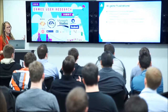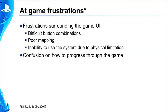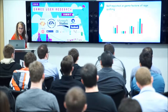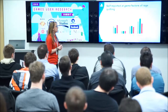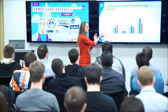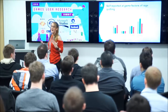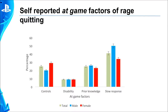Now let's look at at-game frustrations — frustrations surrounding the game UI: difficult button combinations, poor mapping, an inability to use the system because of a disability or physical limitation, or general confusion in how to progress. The reason with the most rage quits is slow responses — that feeling of 'I totally pressed jump and didn't jump.' Prior knowledge frustration has to do with the game expecting you to know information it didn't teach you — players got frustrated early on because the game assumed they knew what to do.